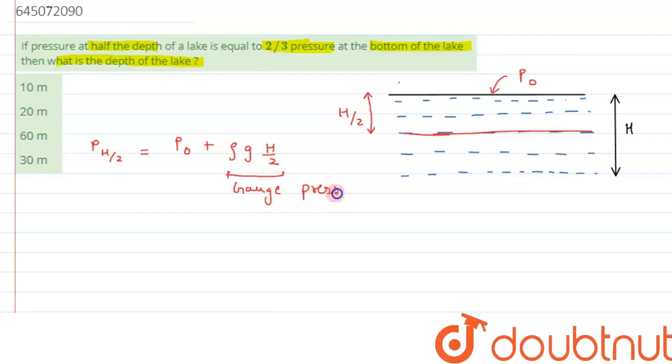Similarly, we can write pressure at bottom as P₀, that is atmospheric pressure, plus ρgH, this time, because the depth is H capital H. So this is the total pressure, and this is the gauge pressure means the pressure which is exerted by the liquid.